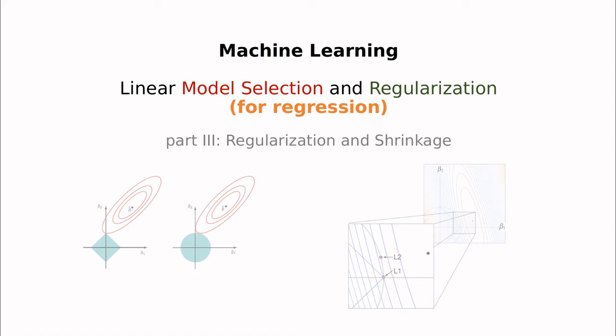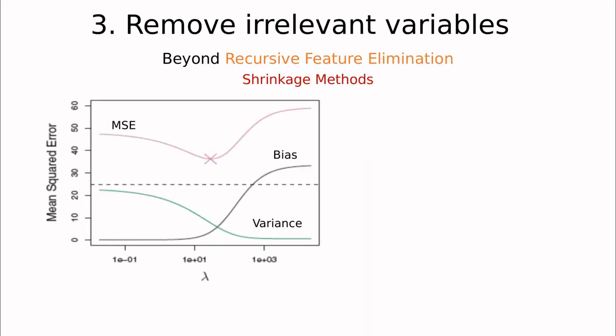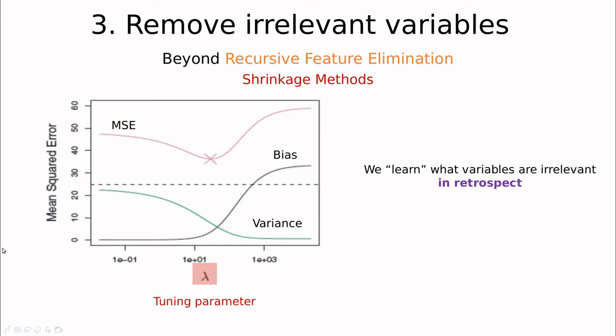Welcome to part three in the series of linear model selection and regularization. So far we've covered variable selection methods based on what I call brute force, which try to find a subset of variables that predict better or reduce error with the least number of variables. Today we're going to do something more fancy: instead of deciding in advance what variables are best, I'm going to introduce a tuning parameter and use the data to decide the optimal value that reduces the number of predictors — learning in retrospect.